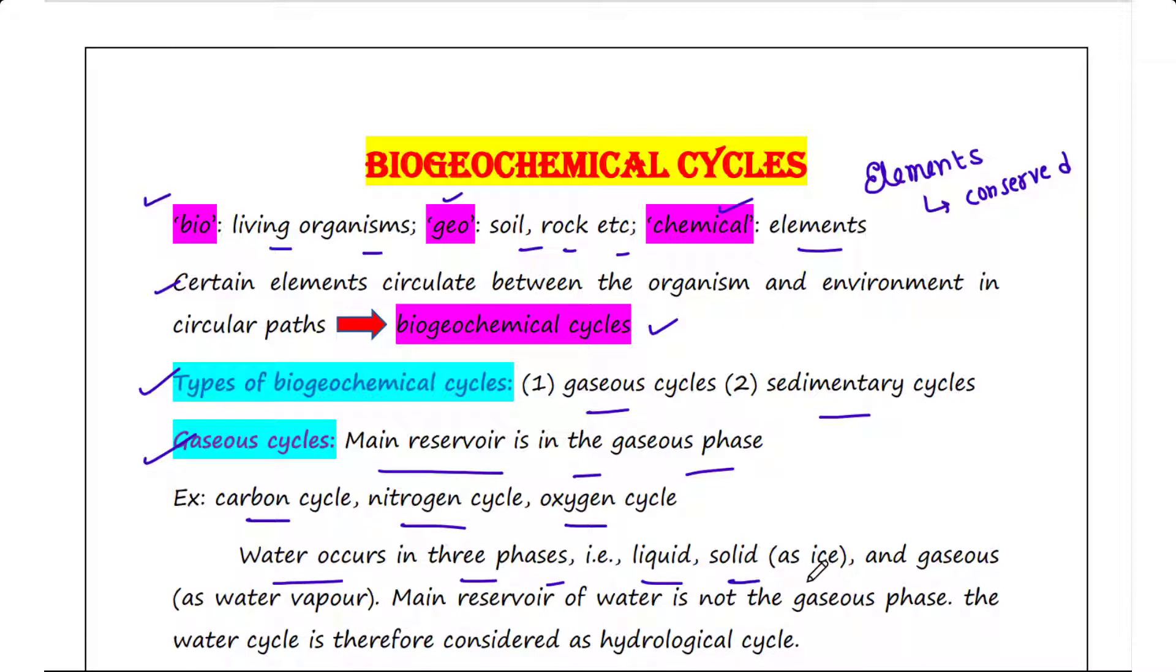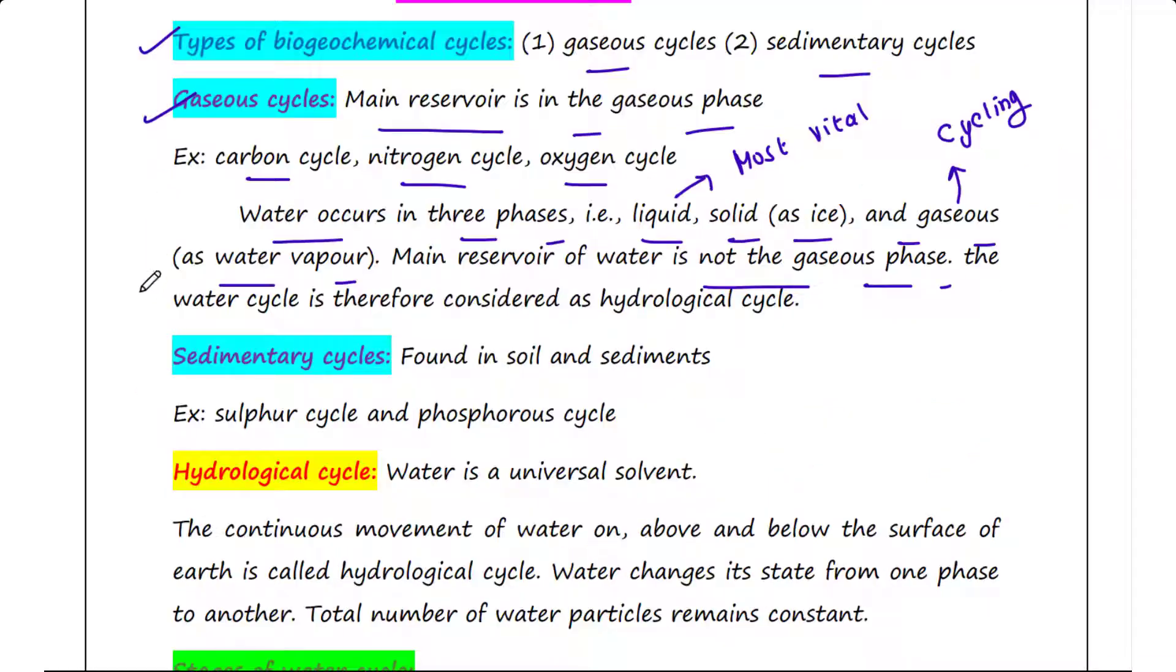Water occurs in three phases: liquid, solid as ice, and gaseous as water vapor. The liquid phase is most vital for living organisms, and the gaseous phase is required for cycling. Since the main reservoir of water is not the gaseous phase, the water cycle is therefore considered as hydrological cycle.